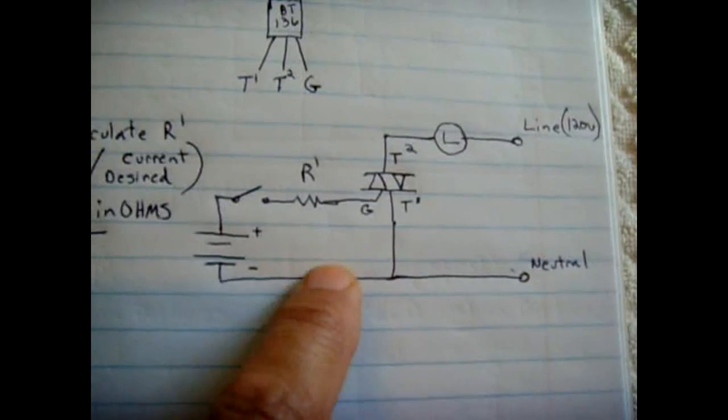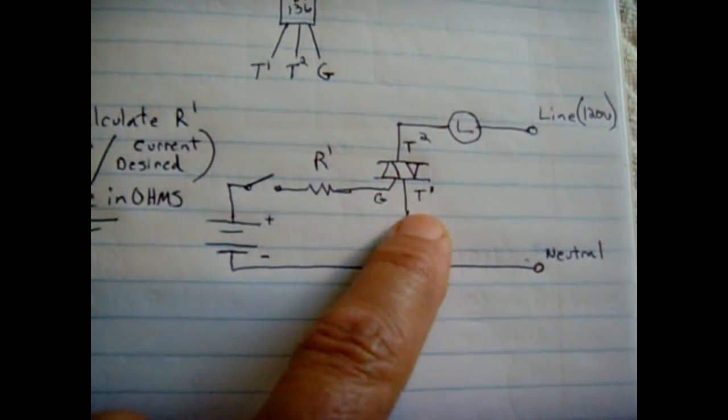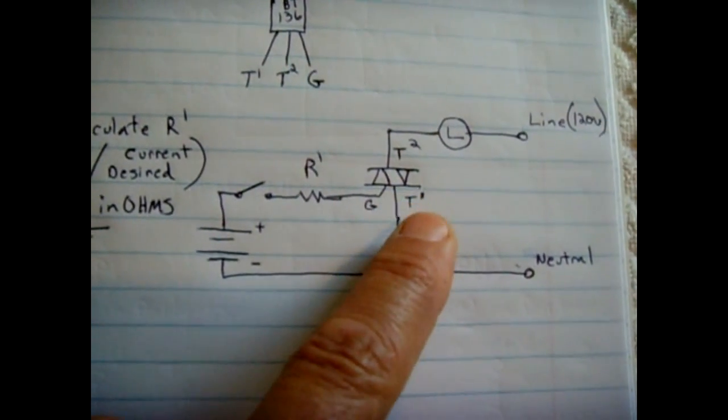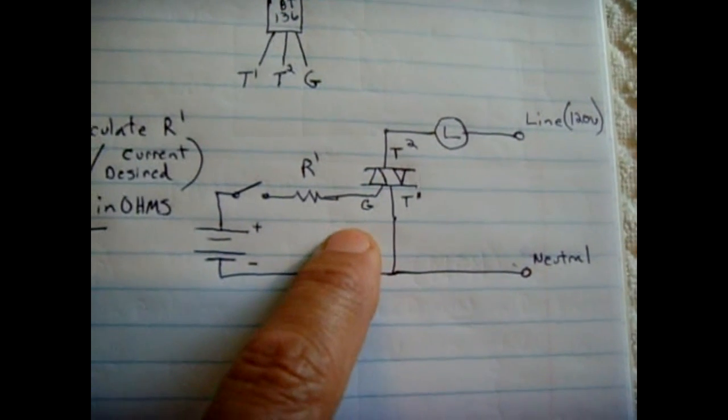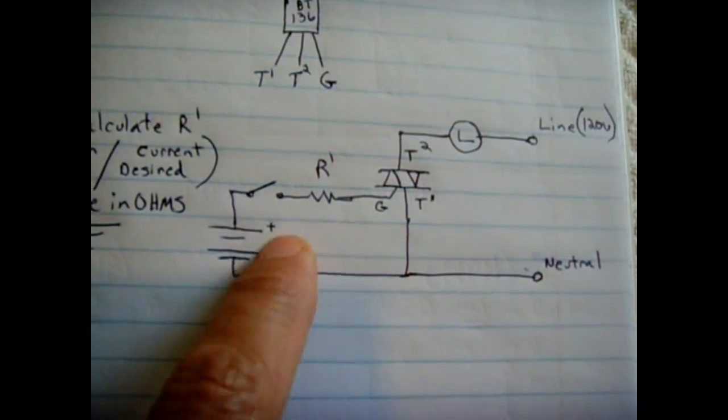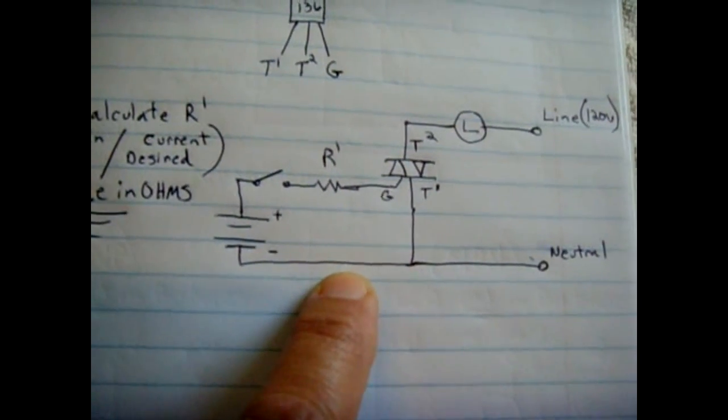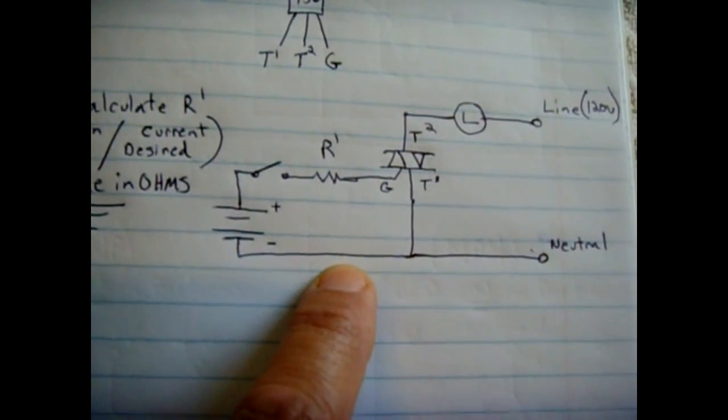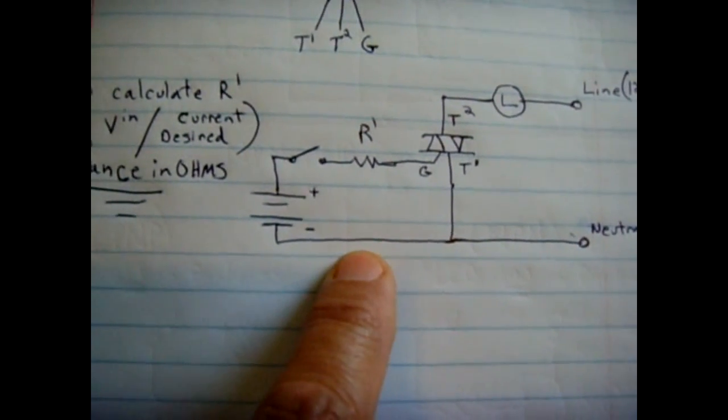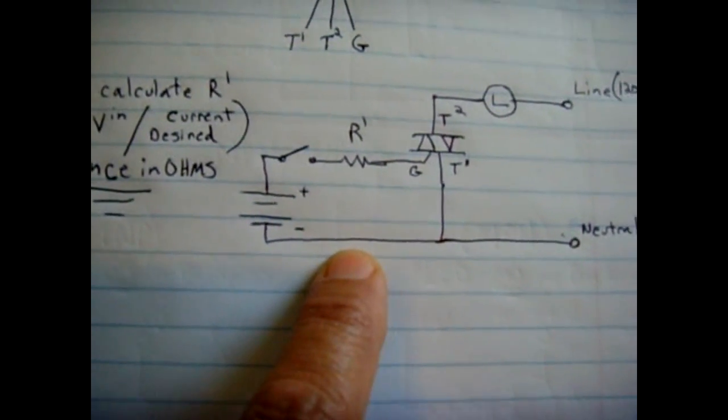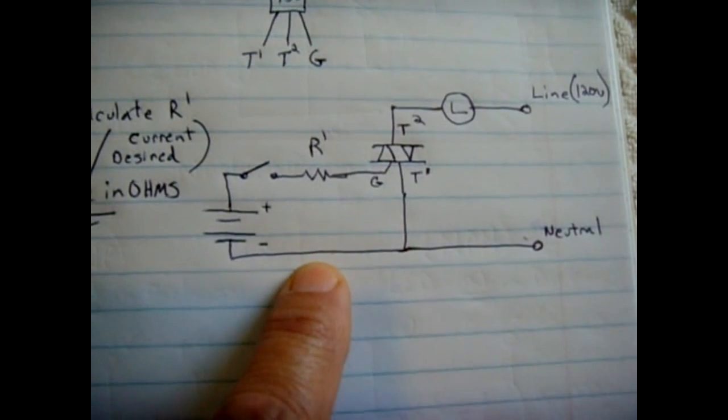It's also a good idea to put a fuse here between the negative and the neutral, in case this ever shorted—this triac—and one of the terminals shorted to the gate, you can have 120 volts going to your battery.